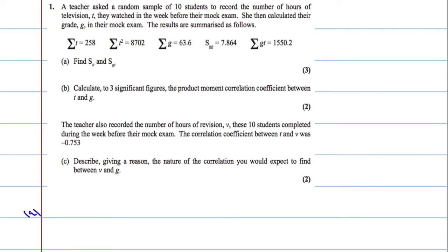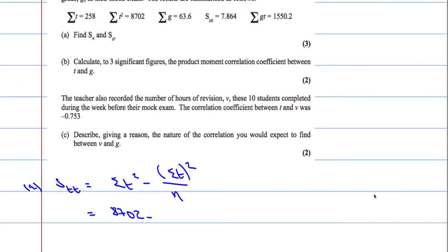Okay. So first thing we're going to do is work out S_TT. S_TT is going to be found by doing the sum of T squared minus the sum of T squared over N. Now let's see if we have all this. We have the sum of T, we have the sum of T squared, and N is going to be 10. So we get 8702 minus 258 squared over N, which is 10.